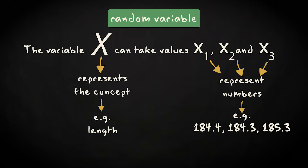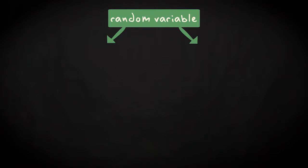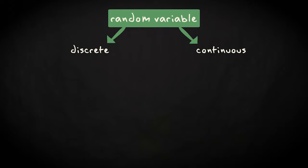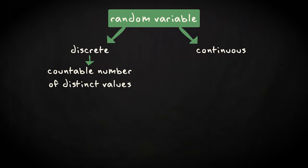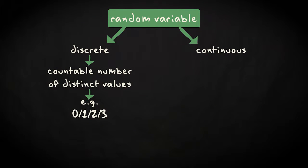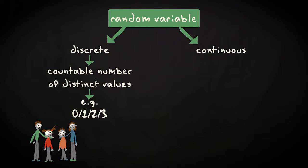There are two types of random variables: discrete and continuous. A discrete random variable is one which may take on only a countable number of distinct values, such as 0, 1, 2, 3. In fact, if a random variable can take on only a finite number of distinct values, then it must be discrete. Examples of discrete random variables include the number of children in a family or whether you had to wait in front of a traffic light today.